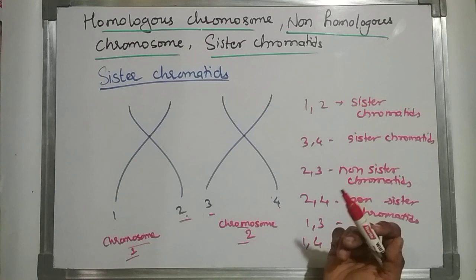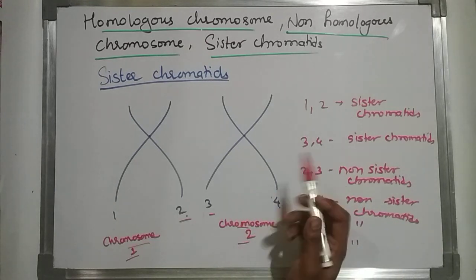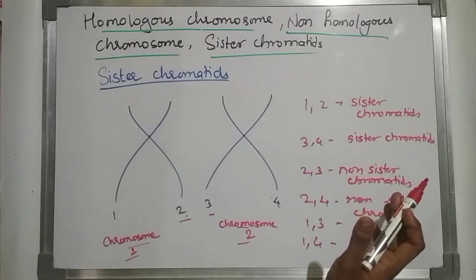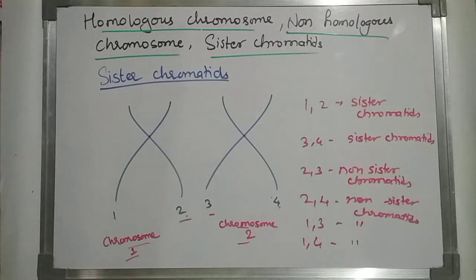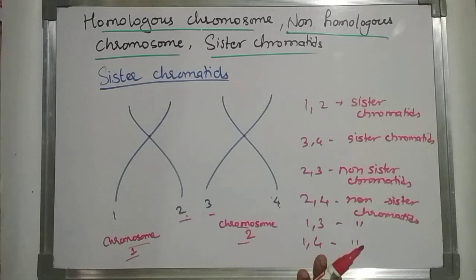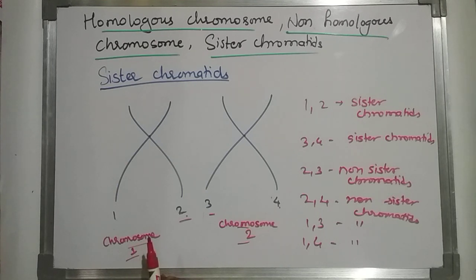This is all about homologous chromosomes, non-homologous chromosomes, sister chromatids, and non-sister chromatids. Hope you understood this video. If you have any doubt regarding this topic, please comment below. Stay tuned to Bio Knowledge for further videos. Thank you.